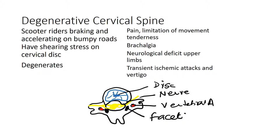For degenerative cervical spine disease, consider scooter riders braking and accelerating on bumpy roads — they have shearing stress on the cervical disc, which degenerates and herniates. This causes pain and limitation of cervical spine movement with tenderness. It may then press on the nerve root causing brachialgia and neurological deficit in the upper limbs, or involve the vertebral artery causing transient ischemic attacks and vertigo.